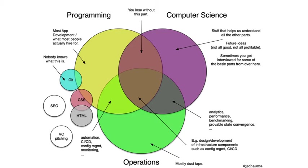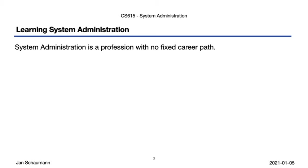We'll get back to some of that in our next videos, but perhaps let's take a quick step back and see how system administration is traditionally learned. System administration is a profession, and it obviously has to do, to a rather significant part, with computers. I'll later and throughout the semester try to convince you that it very much focuses on people too. Either way, system administration doesn't have a strict career path — to be honest, it doesn't even have a fixed job description, as we'll see in our next video segments.